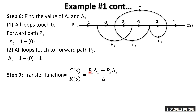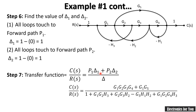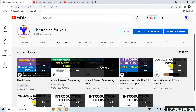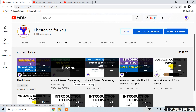Now substitute all values into the transfer function formula. With two forward paths, we have C(s)/R(s) = (P1·Δ1 + P2·Δ2) / Δ. Substituting the known values of P1, P2, Δ1=1, Δ2=1, and the calculated delta gives us the final transfer function of the given signal flow graph. We will continue with more examples in subsequent videos. Thank you for watching.